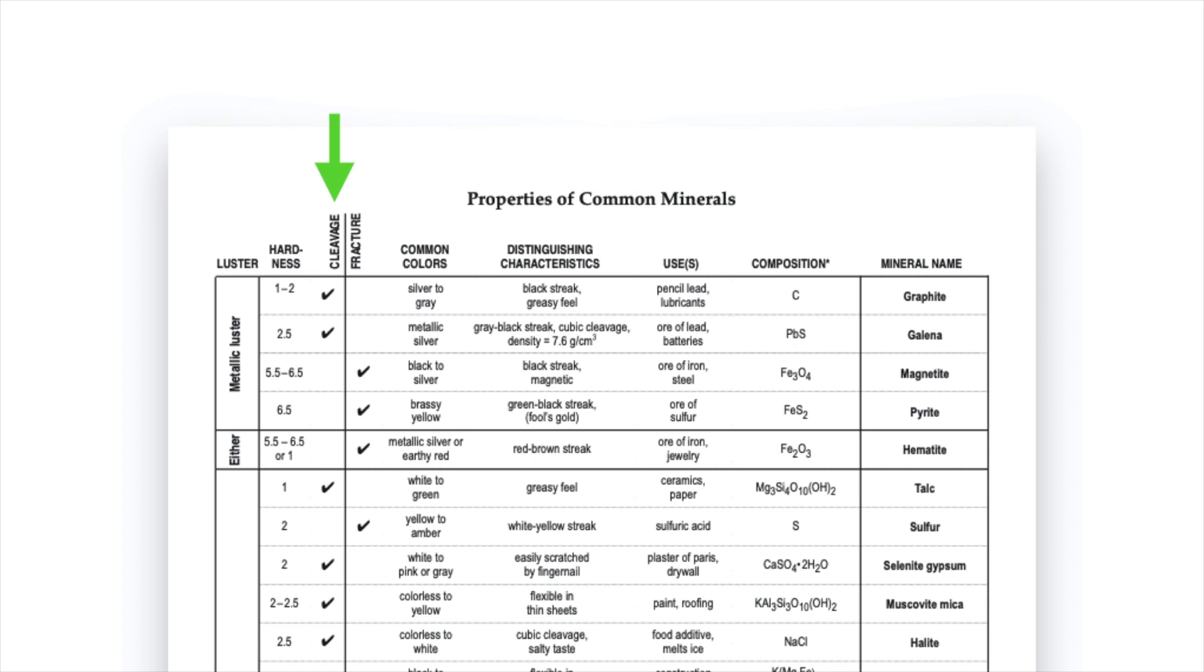Next is what we call breakage which would be either cleavage which would be minerals that break in a predictable way or fracture which are minerals that break randomly. So that's something you can usually but not always tell by looking at the actual sample or perhaps breaking it to see if it breaks apart predictably displaying cleavage or randomly and irregularly which would be fracture.